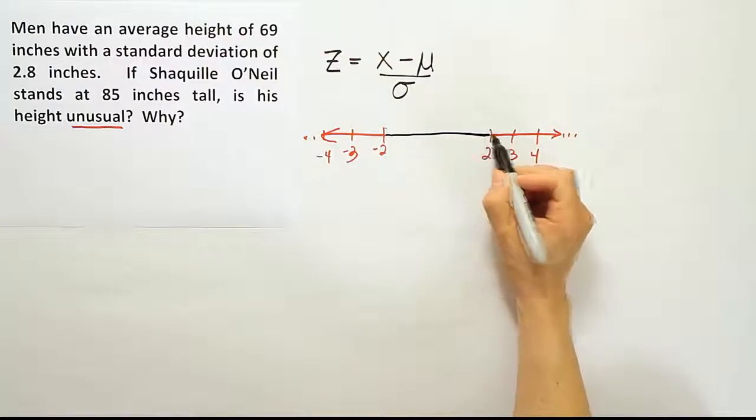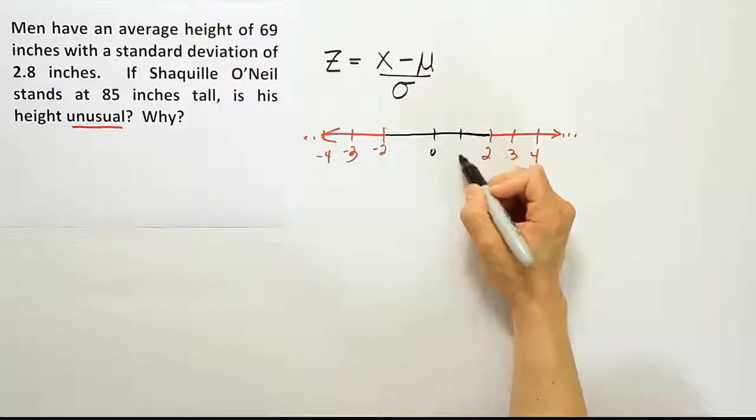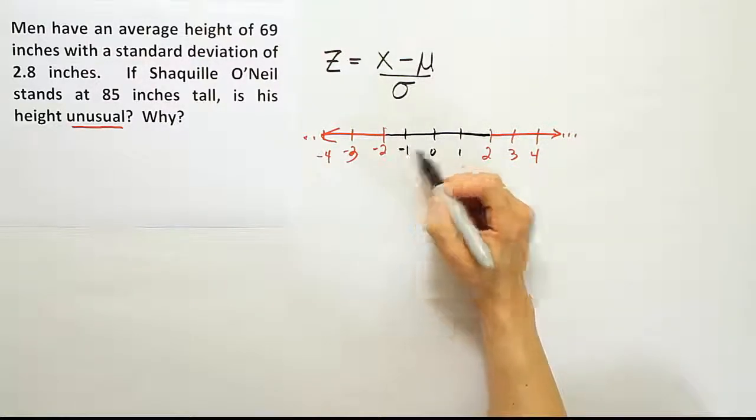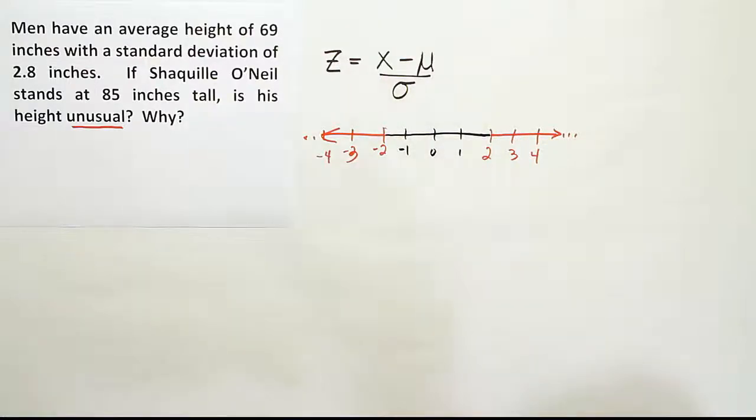The stuff here in the middle, zero, one above, one below, that stuff generally can be seen as pretty typical or normal. Anything outside starts to become unusual.